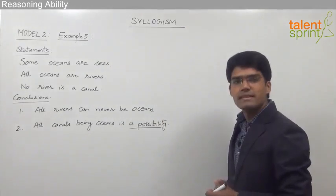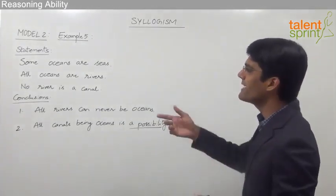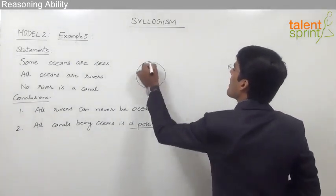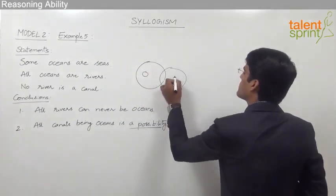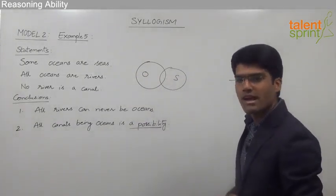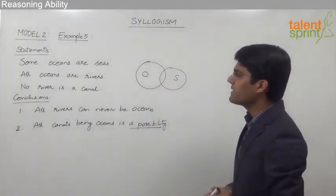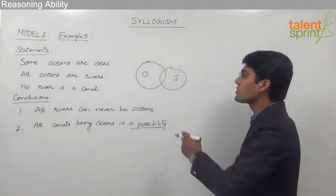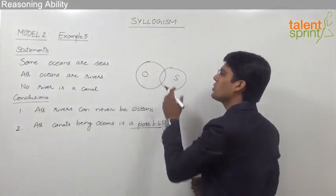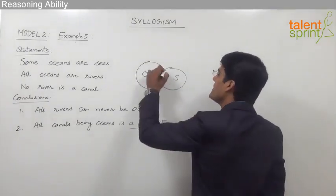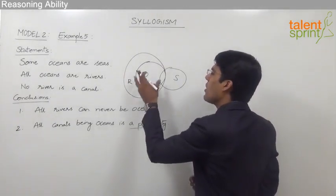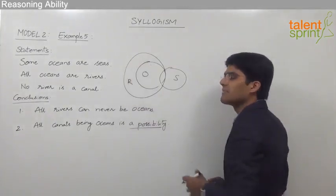Let us first try the basic diagram for the given statements. The first statement is some oceans are seas, so oceans and seas overlap each other. The second statement is all oceans are rivers, so all the oceans have to be inside the rivers. Going by the basic diagram, rivers can be taken such that all the oceans are inside the rivers.